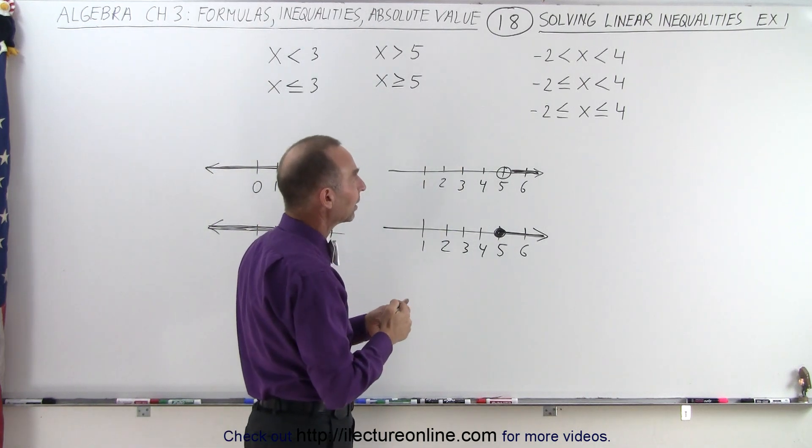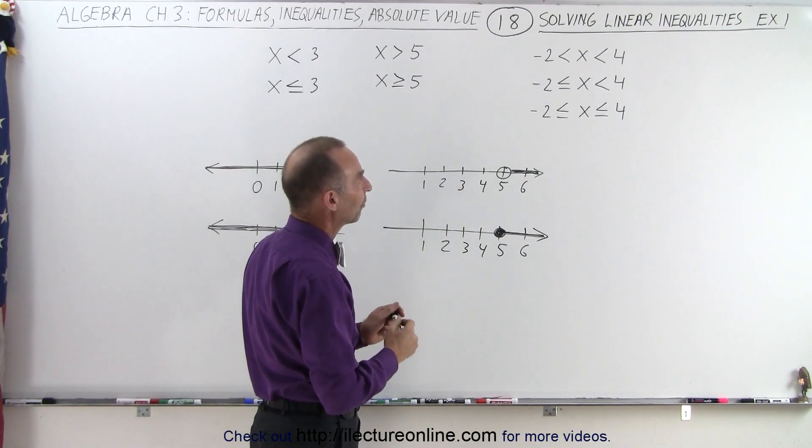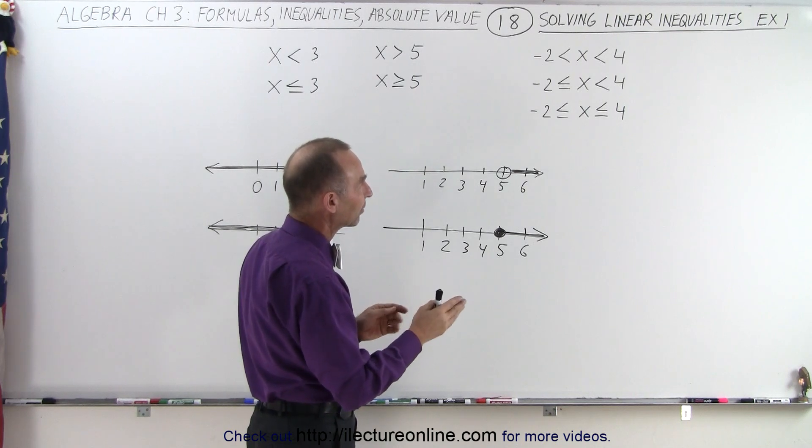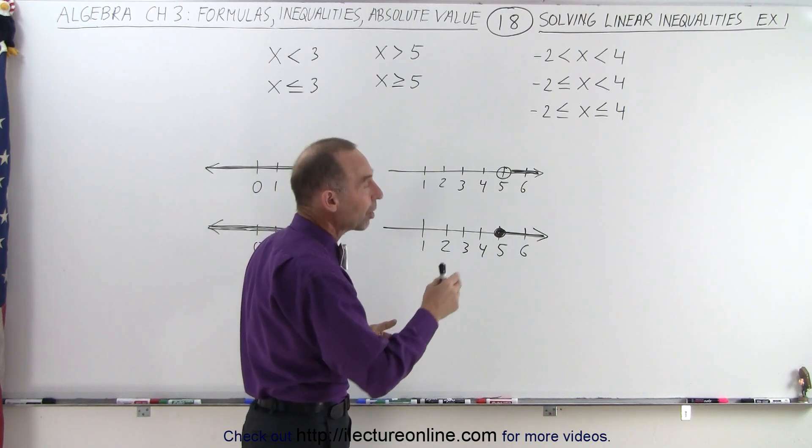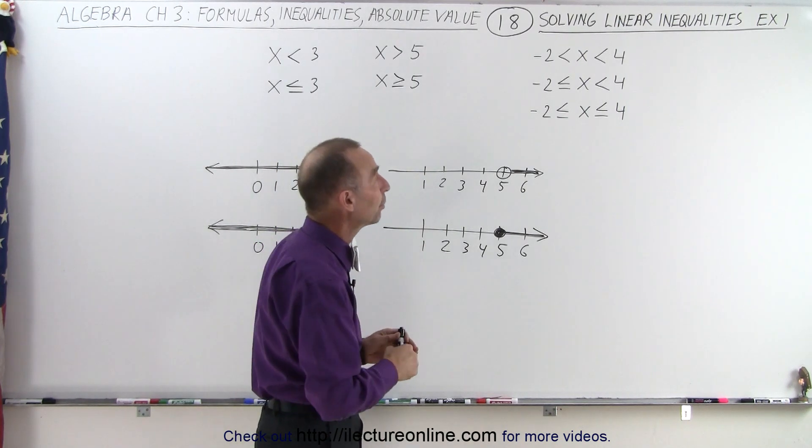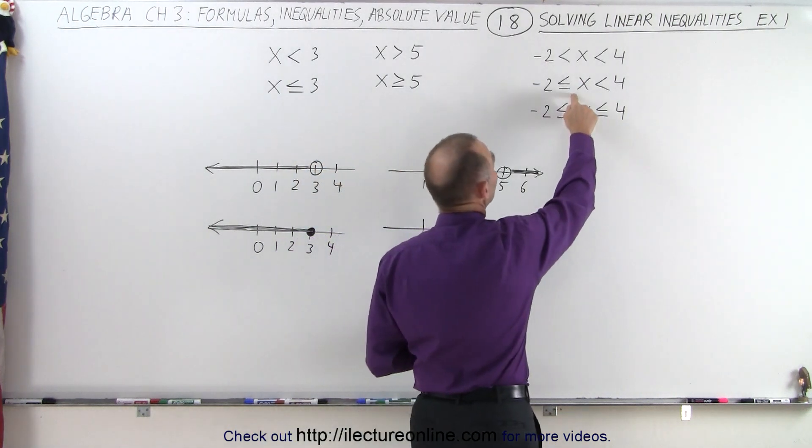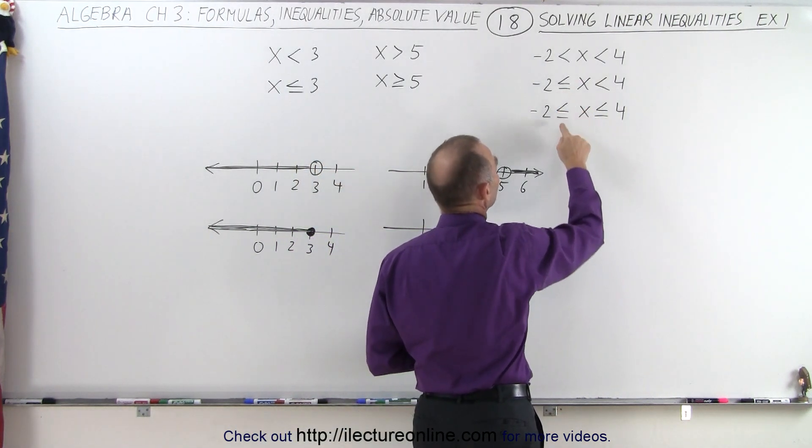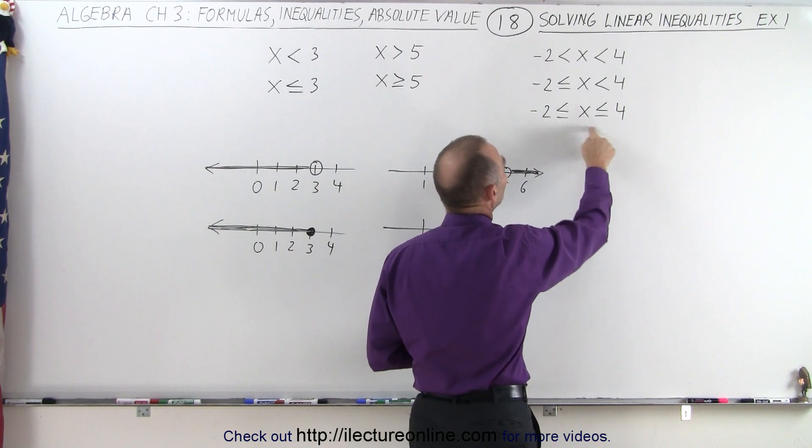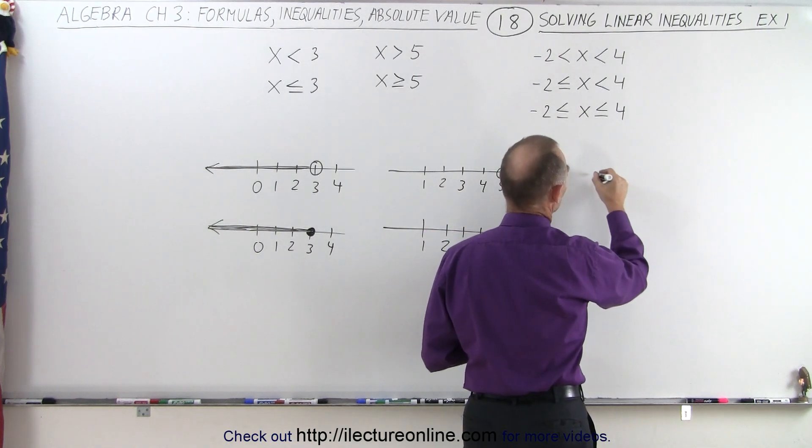Now we have the possibility that we're looking for all values for x that are greater than negative 2 and smaller than 4, but not including the endpoints. On the second example, we include the left endpoint. On the third example, we include both endpoints. That's what this would look like.